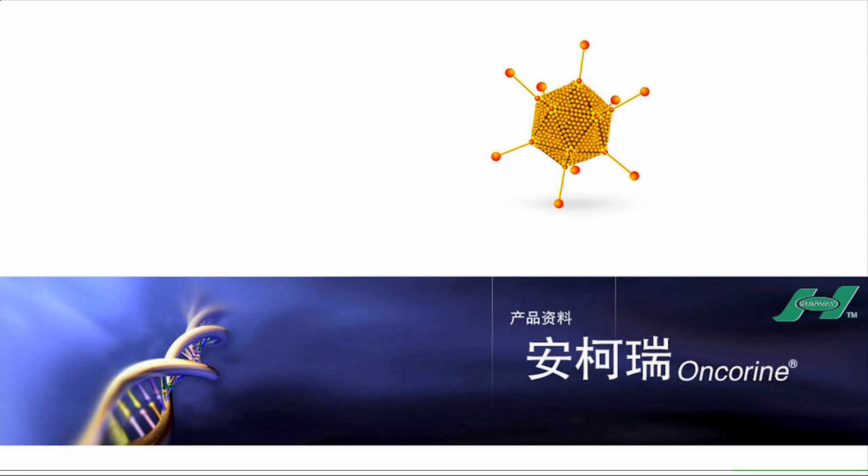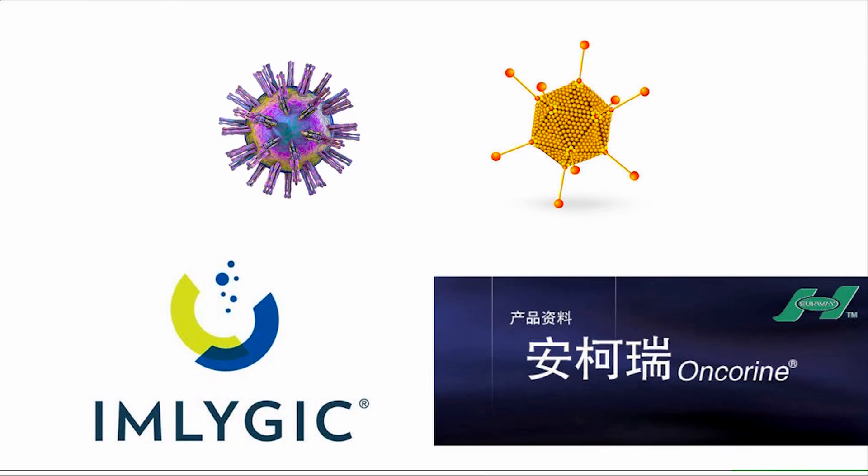This idea of using viruses as friends culminated in the first commercialized oncolytic virus called Oncorin. Oncorin was a modified adenovirus vector approved by the Chinese SFDA in 2005 to treat a form of carcinoma in combination with chemotherapy. In 2015, the US approved its first oncolytic virus called Imlygic, a modified form of the herpes simplex virus that was shown to be effective at killing melanoma lesions.